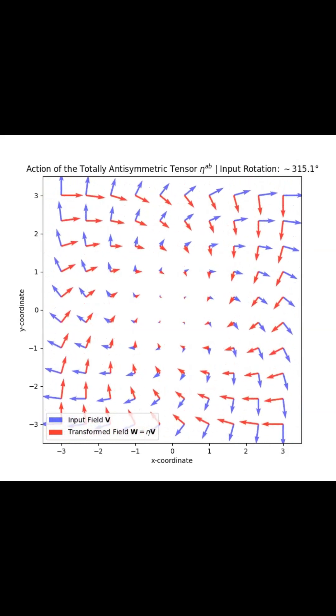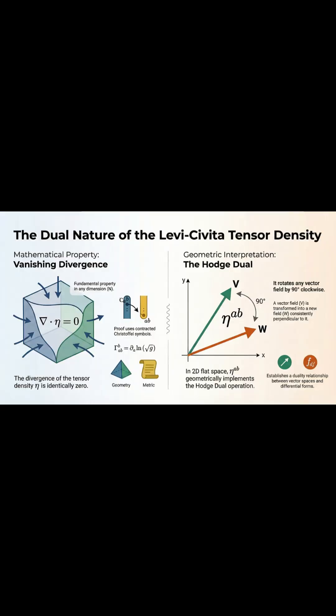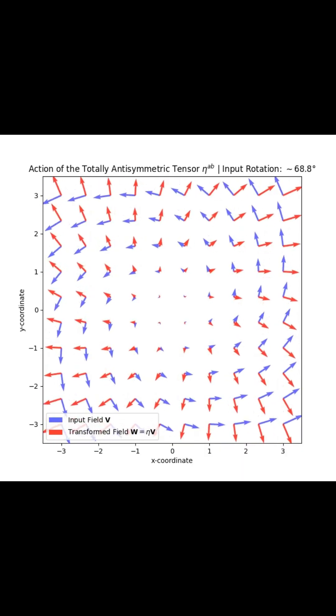So, the totally anti-symmetric tensor is really this foundational tool that so efficiently connects abstract geometry to visible rotational transformations.